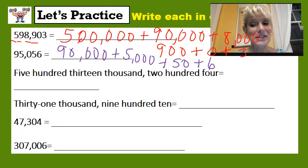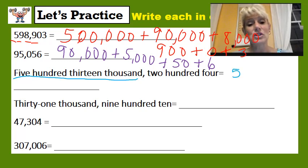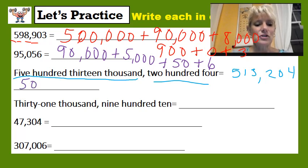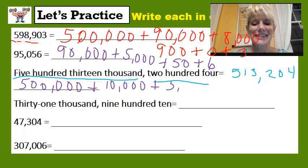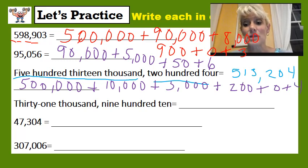I hope you had time to pause the video and check them for yourself. Now I'll go over the answers. We have five hundred thirteen thousand two hundred four. It might be easier to write the number first in standard form and then expand it: five hundred thousand plus ten thousand plus three thousand plus two hundred plus zero plus four — or just plus four, that would be fine.